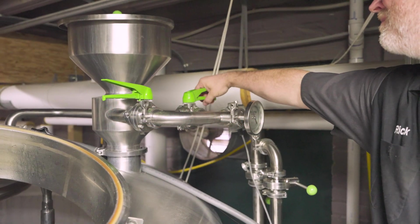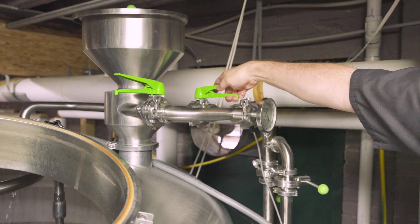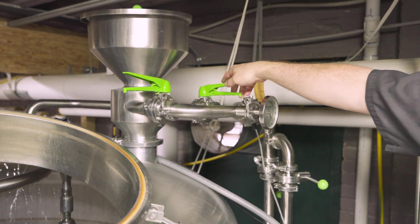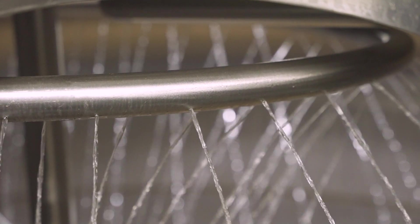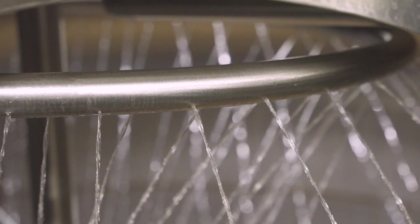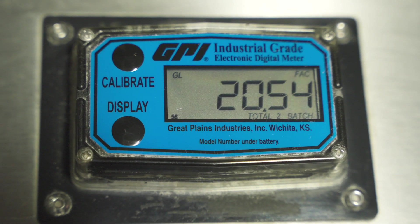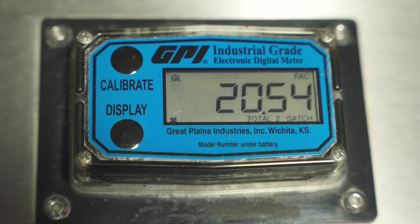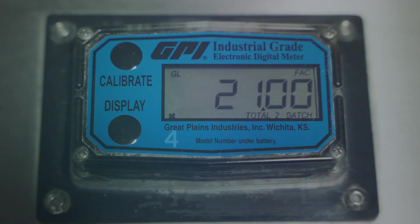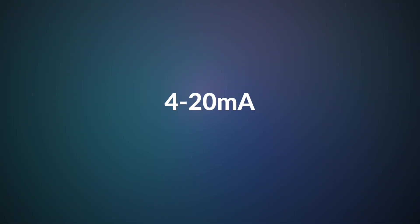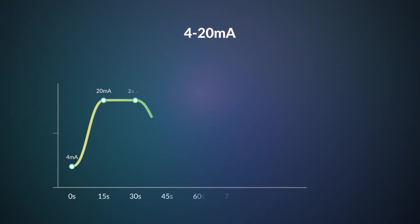If you are batching fluids, these discrete pulses will easily allow your controller to record totals, while also controlling valves and pumps to automatically follow specified batching recipes.